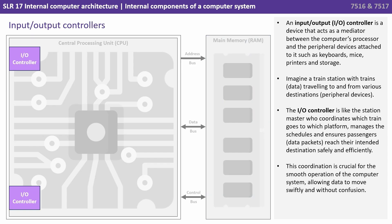An input-output controller, or I/O controller, acts as a mediator between the computer's processor and the peripheral devices attached to it, such as keyboards, mice, printers, storage, etc. Imagine a train station with trains — think of these as data — travelling to and from various destinations, which are the peripheral devices. The I/O controller is like the station master or manager, who coordinates which train goes to which platform, manages the schedules and ensures passengers — our data packets — reach their intended destination safely and efficiently. This coordination is crucial for the smooth operation of the computer system, allowing data to move swiftly and without confusion.